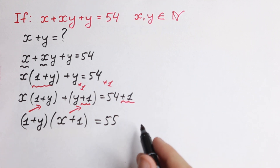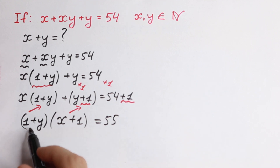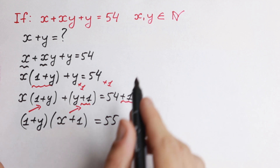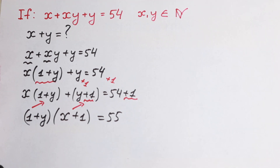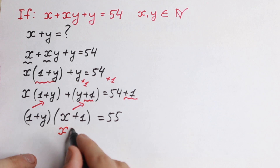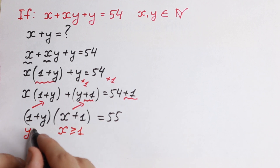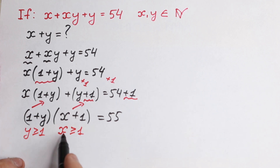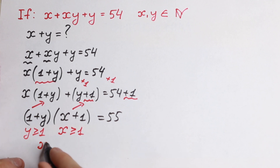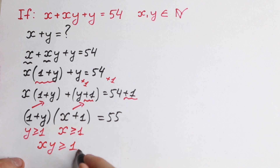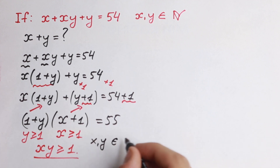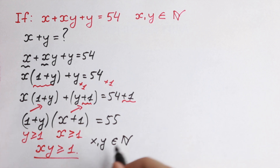We added 1, so we have a product of two parentheses equal to 55. I want to mention one thing: x and y are natural numbers, so x is greater than or equal to 1 and y is greater than or equal to 1. Therefore, both factors (1 plus y) and (x plus 1) are each greater than or equal to 2.